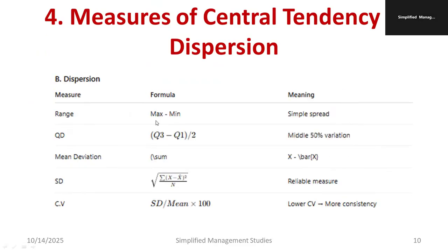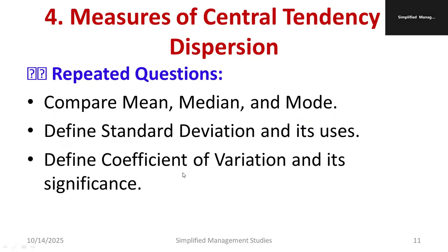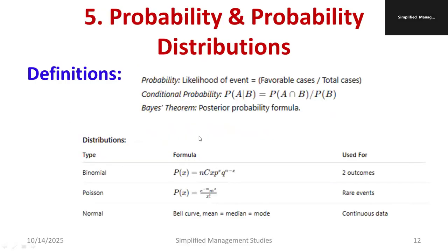Regarding dispersion: range is the difference between maximum and minimum. Quartile deviation (QD) is Q3 minus Q1 divided by 2, representing the middle 50% variation. Mean deviation and standard deviation — SD is the square root of Σ(x − x̄)² divided by n — is the most reliable measure. Coefficient of variation (CV) is standard deviation divided by mean multiplied by 100; lower CV means more consistency. Important questions: compare mean, median, and mode; define standard deviation and its uses; define CV and its significance.